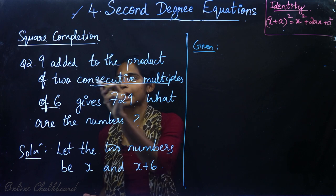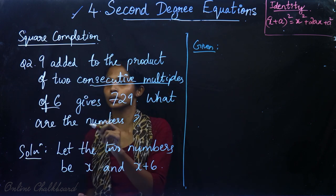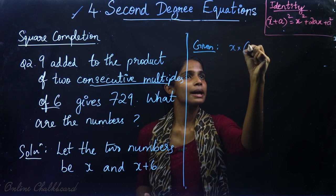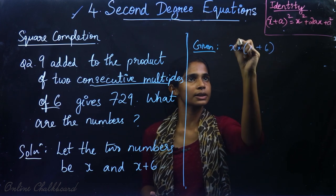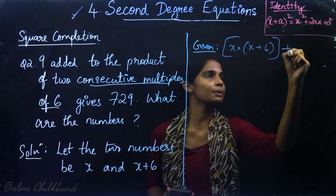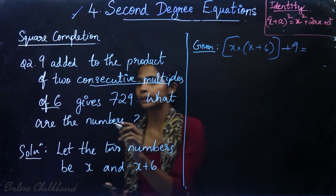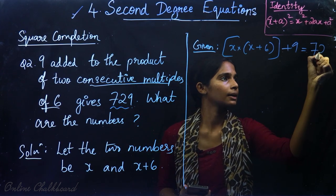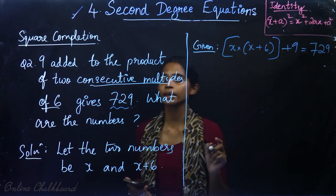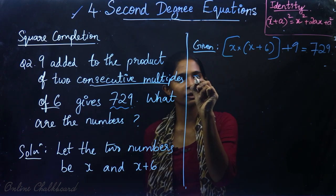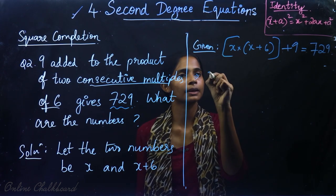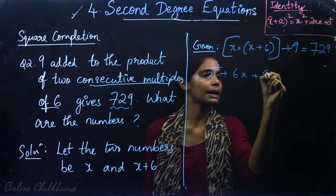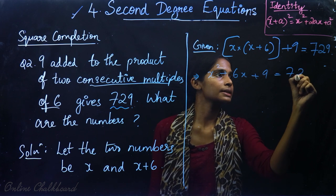We are given that 9 is added to the product of the 2 consecutive multiples of 6. That is, x into (x + 6), and to this product we add 9, which equals 729. Simplifying: x² plus 6x plus 9 is equal to 729.